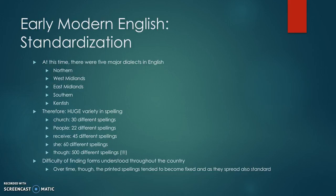Around 1500 there were five major dialects in English: Northern, West Midlands, East Midlands, Southern, and Kentish. These five different ways of speaking English meant a huge variety in the way words were spelled. 'Church' could be spelled 30 different ways, 'people' 22 different ways, 'receive' 45 different ways, 'she' 60 different ways, and 'though' could be spelled around 500 different ways.